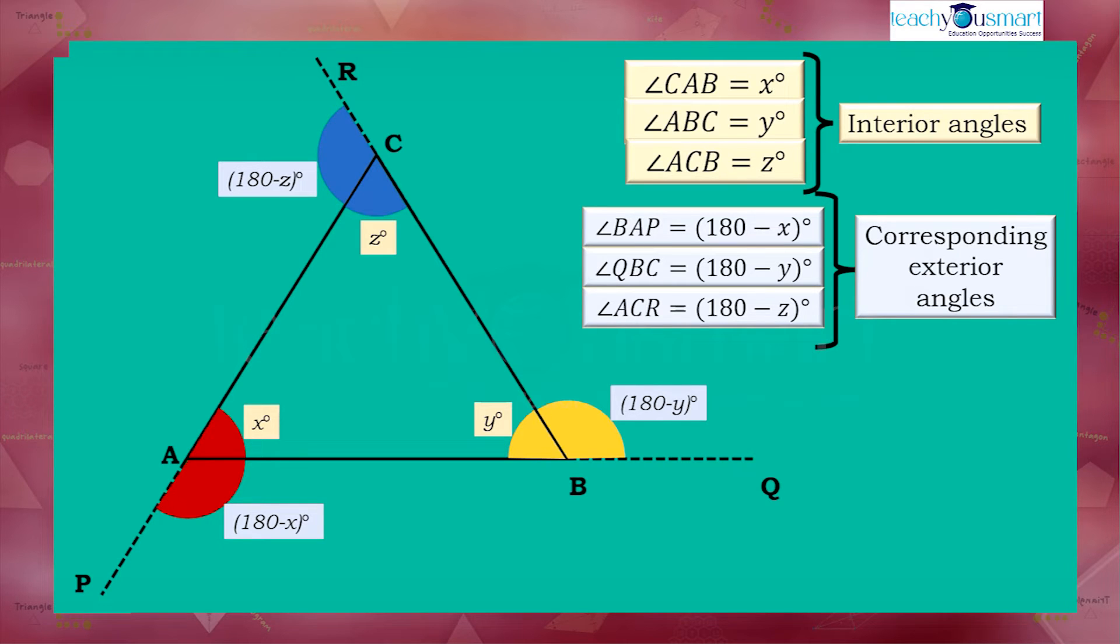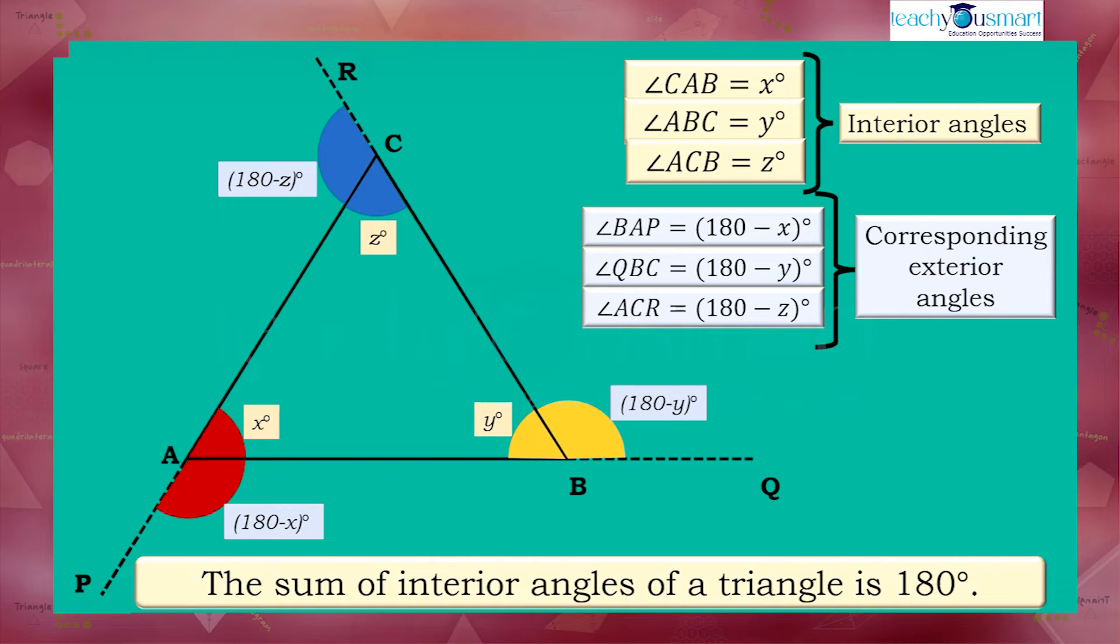As we learned in the previous session, the sum of interior angles of a triangle is X plus Y plus Z equals 180 degrees.